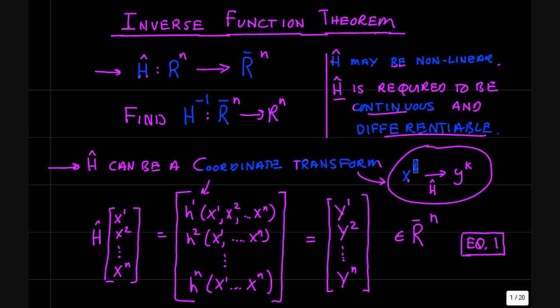So suppose you have some coordinates x^i on an n-dimensional manifold. You can have a continuous differentiable function that converts those into a bunch of new coordinates, y. And for the new coordinates to be valid, useful coordinates, this function h must be invertible. And it has to have some other properties.